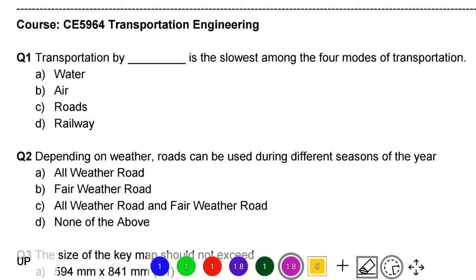The first question: transportation by blank is the slowest among the four modes of transportation. Option A: water. Option B: air. Option C: road. Option D: railway. The correct answer is option A, water.